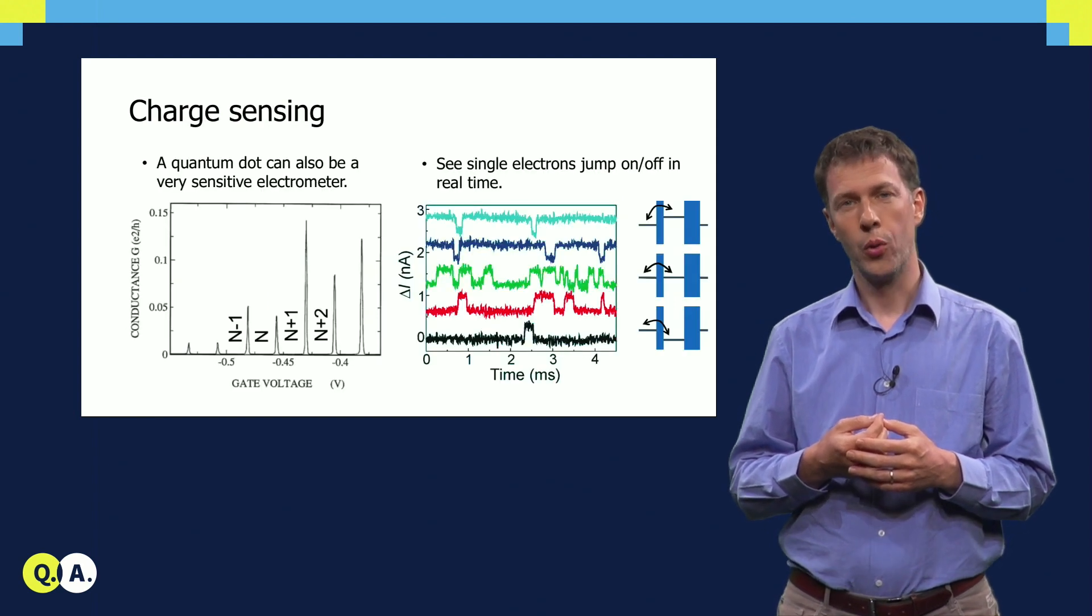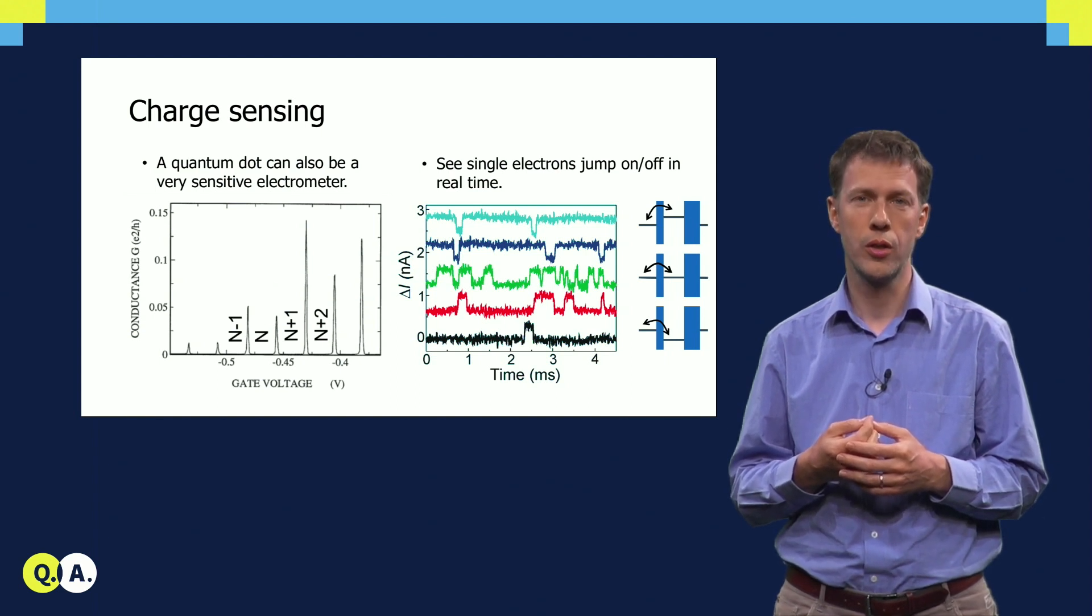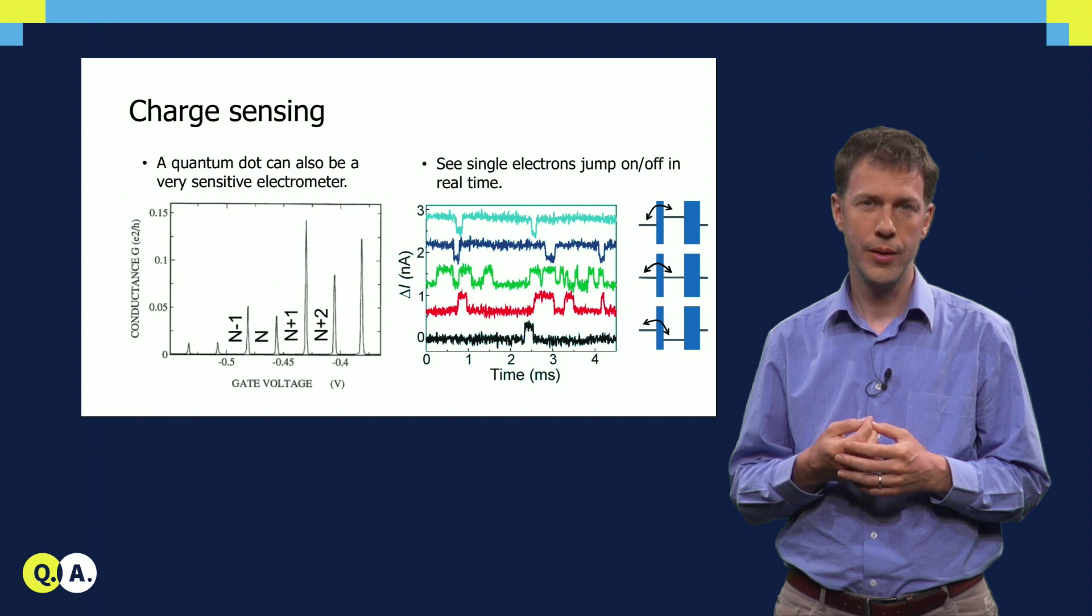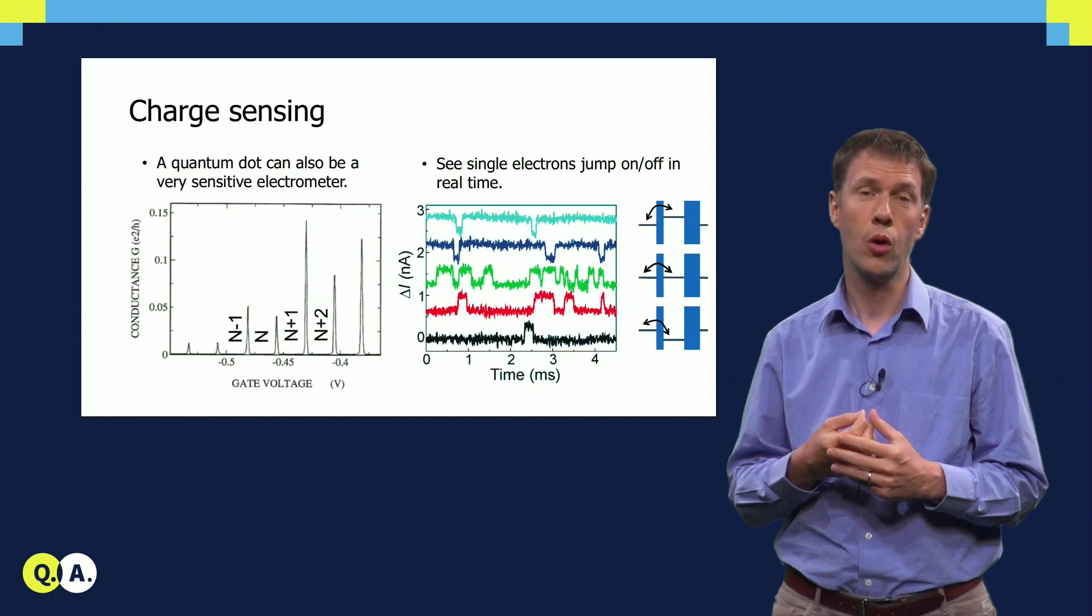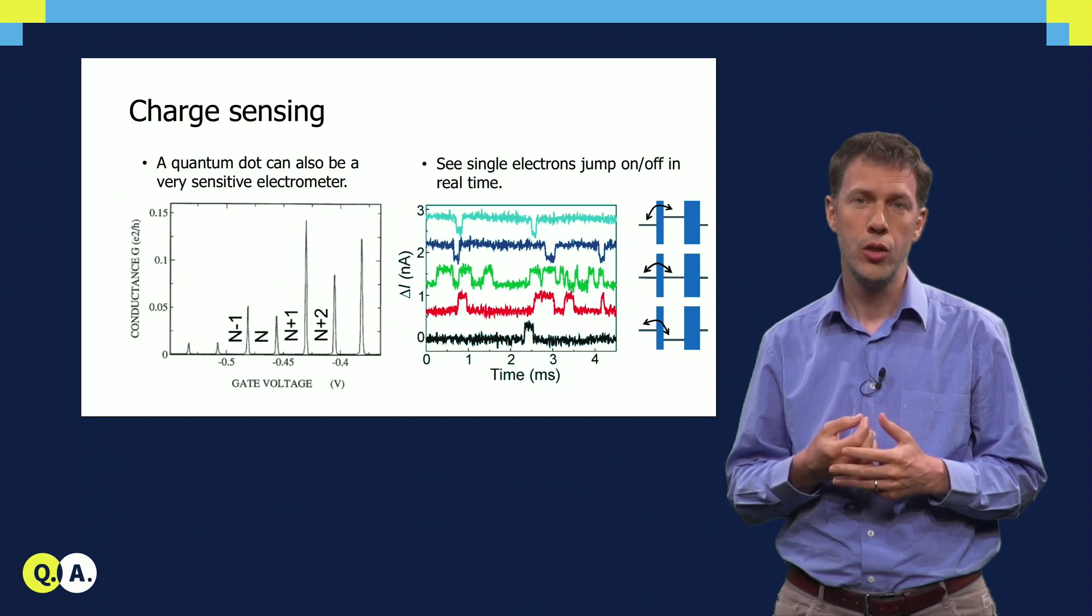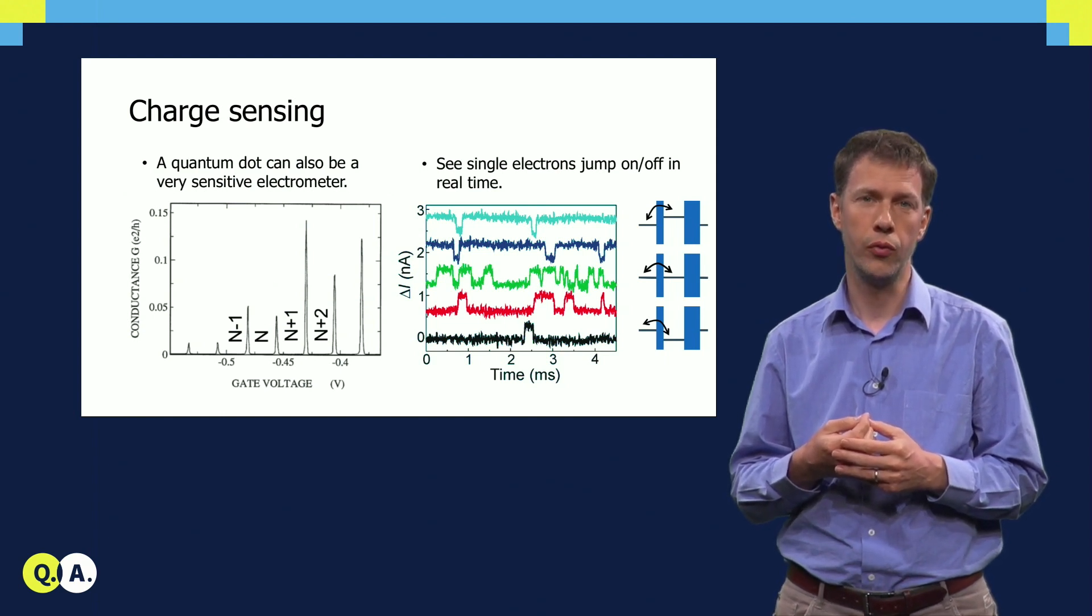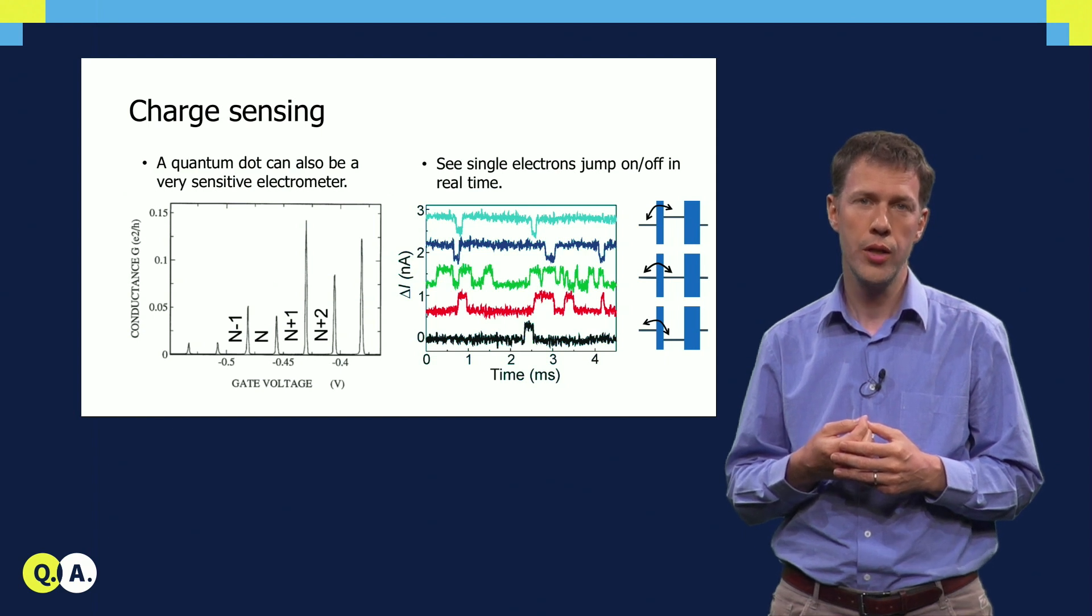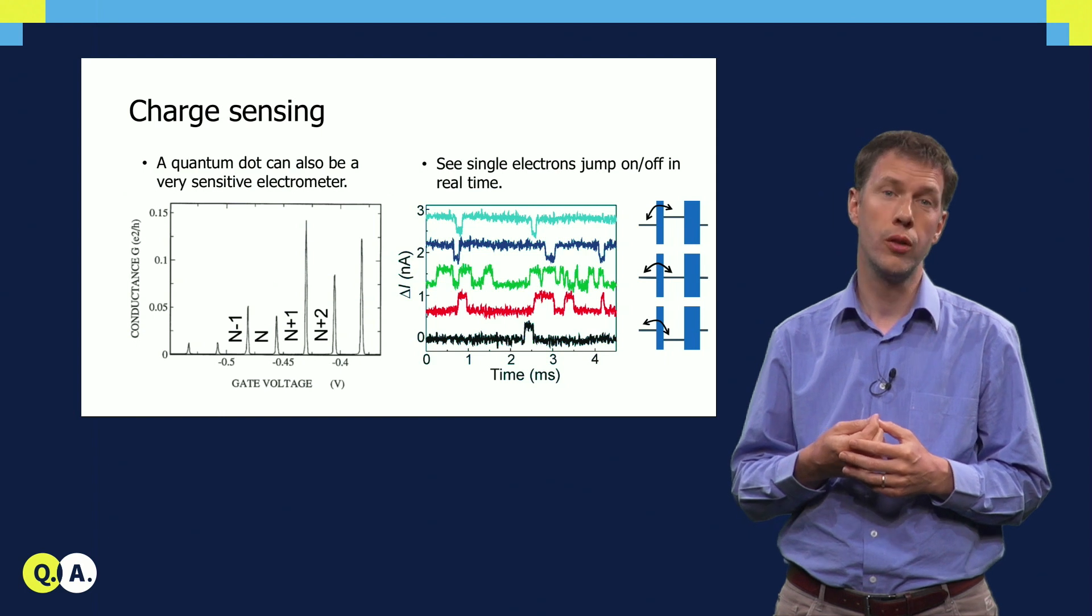A second important method to measure and detect the presence or absence of individual electrons is what we call charge sensing. Basically, if you imagine a single quantum dot, and another quantum dot next to it, as you have seen, the current through the second quantum dot sensibly depends on the gate voltage. With a small change in gate voltage, we can produce a large current, or completely shut off the current.